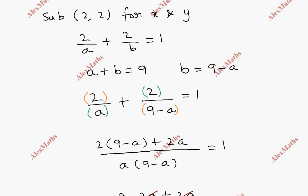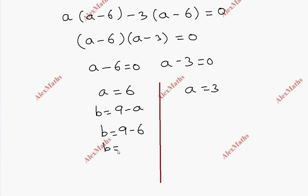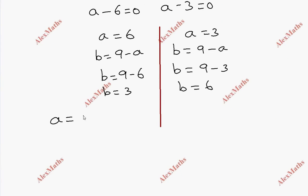Since b equals 9 minus a: when a equals 6, b equals 9 minus 6 equals 3; when a equals 3, b equals 9 minus 3 equals 6. So we have two cases: a equals 6 and b equals 3, or a equals 3 and b equals 6.